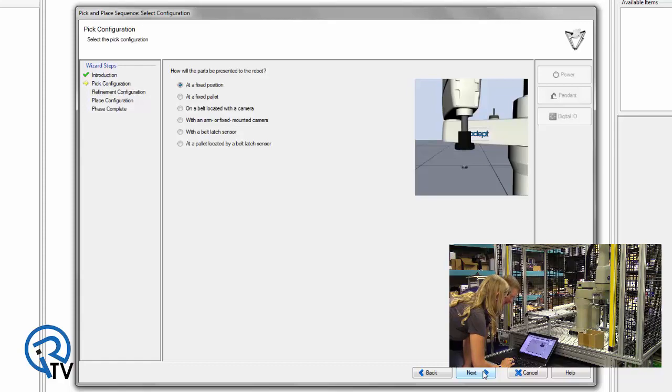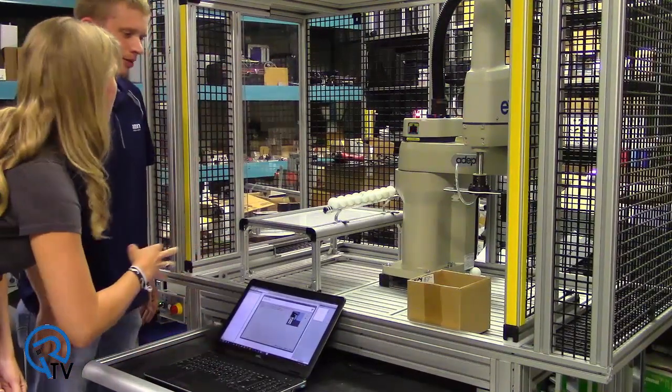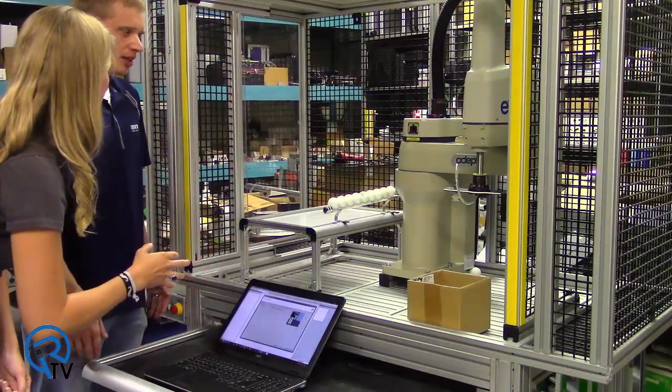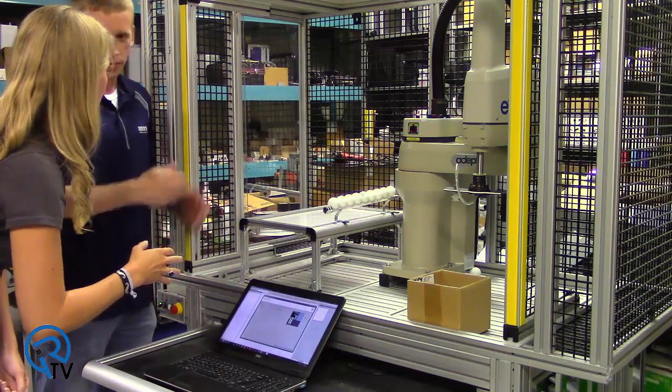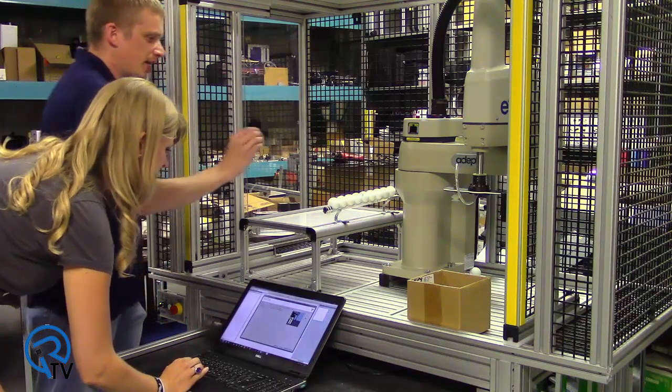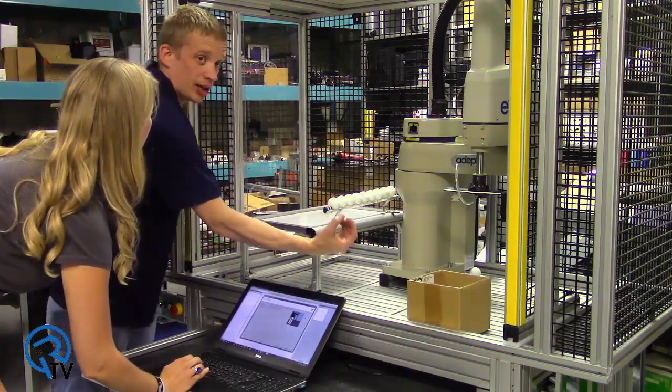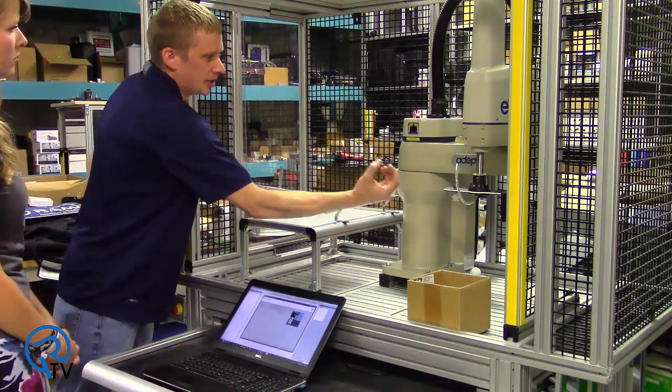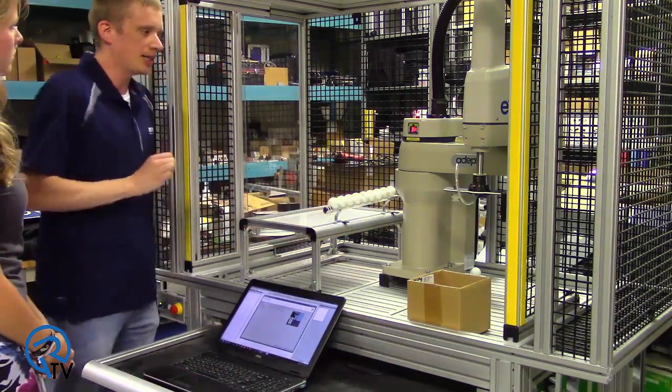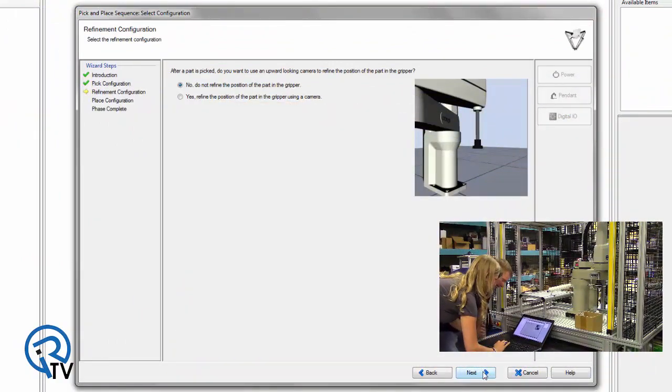Now it's going to say how are the parts can be presented the robot. This is a fixed location, so choose fixed position. Okay. So but if we didn't have a fixed location we could do conveyor tracking and all that kind of cool. Conveyor tracking, vision, and everything is wizard based, so it's going to walk you through everything. Oh my gosh. Okay.